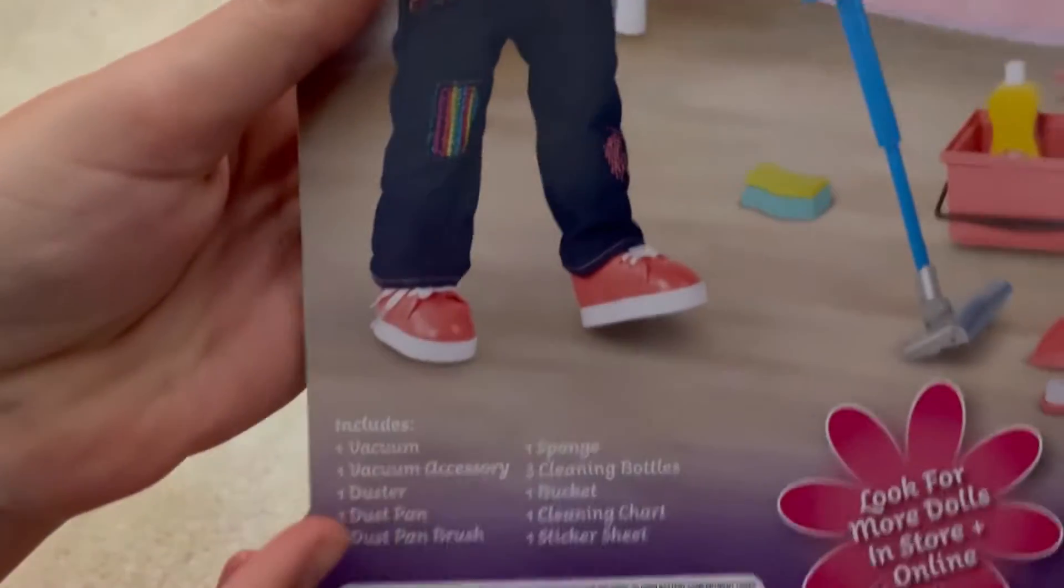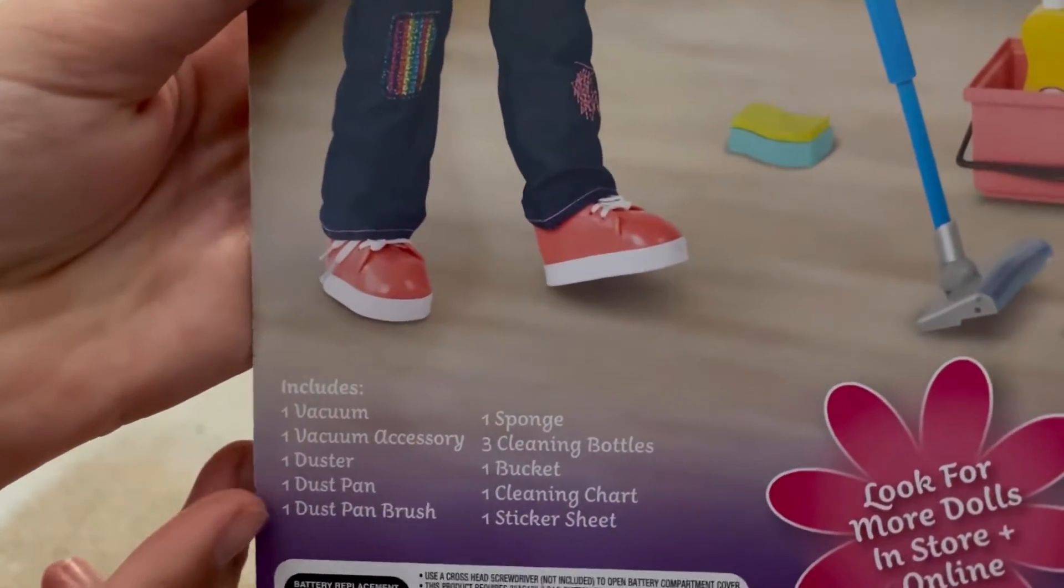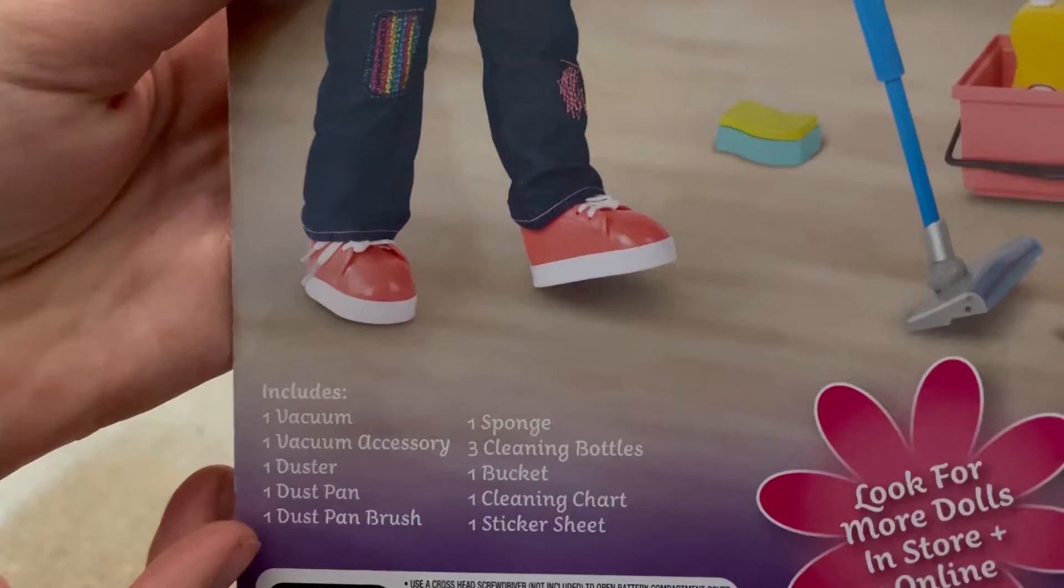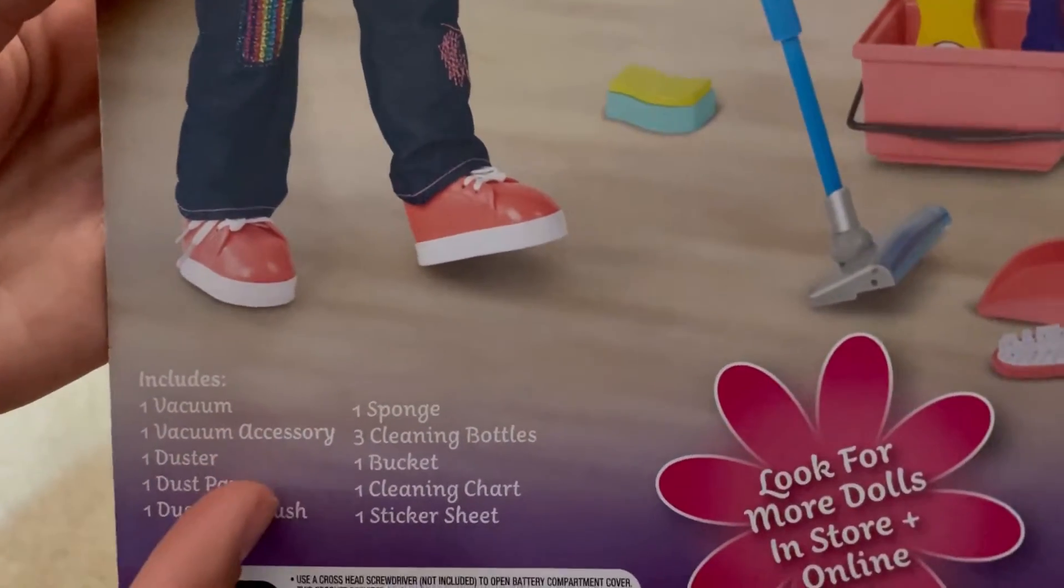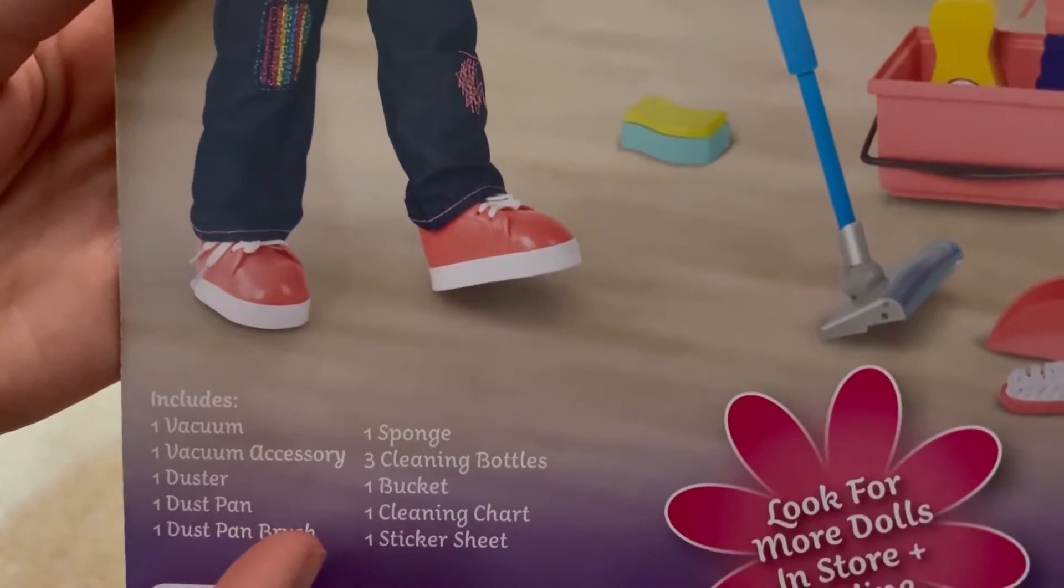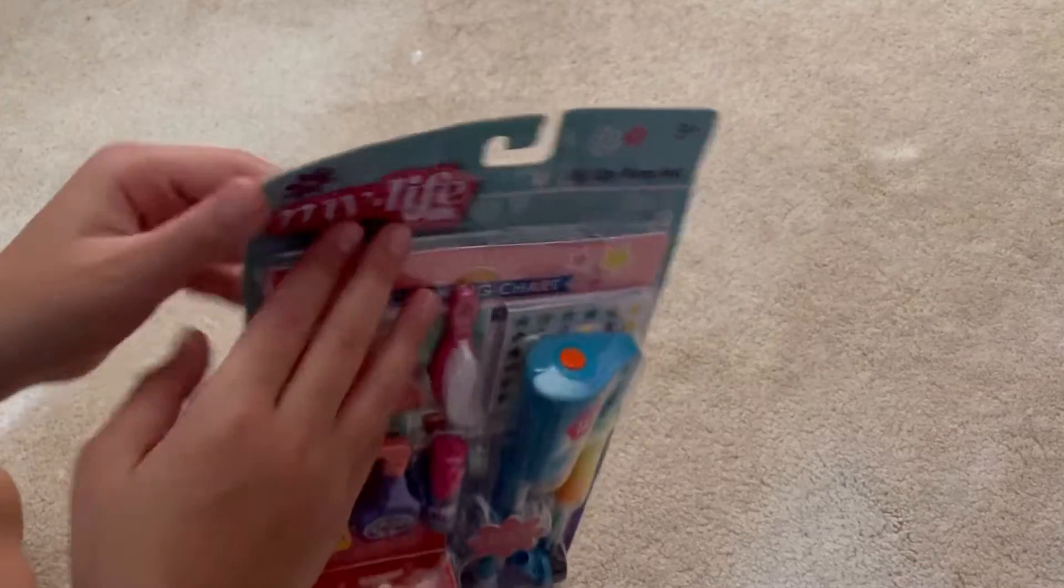It includes a vacuum, one vacuum accessory, one duster, one dustpan, one dustpan brush, sponge, three cleaning bottles, a bucket, a cleaning chart, and a sticker sheet. I'm going to start to open it, I'm so excited.